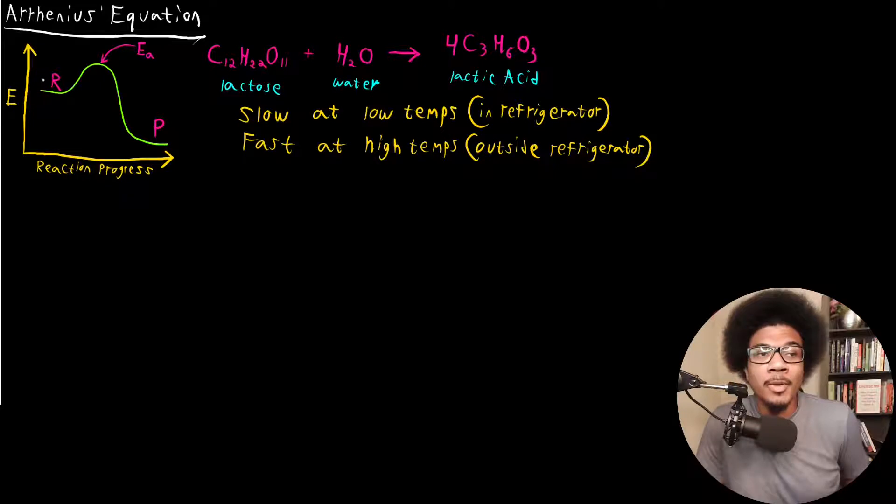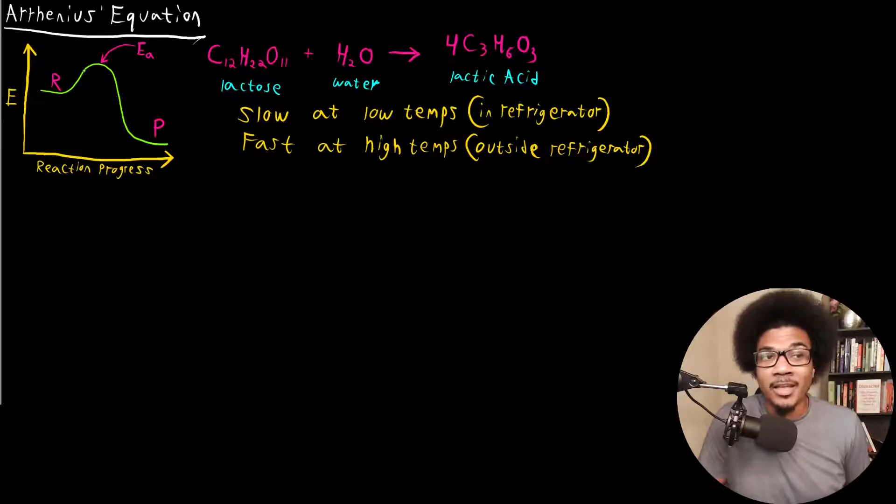We talked about this reaction coordinate diagram that I introduced in the first video of the previous unit. You've got some reaction coordinate where you start out with your reactants. The energy increases as the reaction progresses. It has to overcome an activation energy barrier, which I'm denoting here as E sub A, and then eventually it goes down to the products.